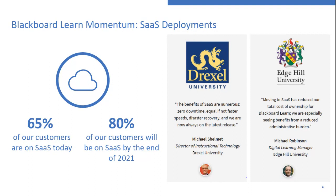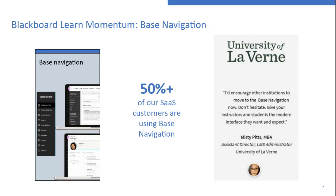Being on SaaS gives you access to the latest features and functionality — things like base navigation, Blackboard Data, Blackboard Assist chatbot, and zero downtime upgrades. In terms of base navigation, which is the more modern version of the main application's navigation, we have just crossed an important milestone: more than 50 percent — actually 52 percent — of our SaaS customers are now using base navigation. We want to encourage everyone who hasn't made the move yet to start thinking about this.